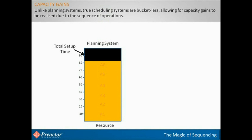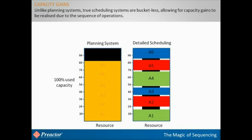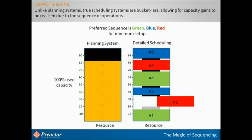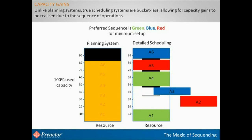Now let us look at the same load in a scheduling system. Here we have preserved the sequence that we loaded each batch, and added the setup time between each. The preferred sequence is green, blue, then red, as this will minimize the setup time, and by doing this, we have a capacity gain, or increased efficiency.